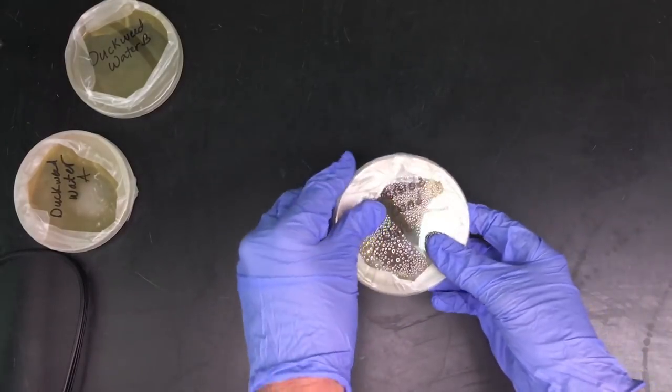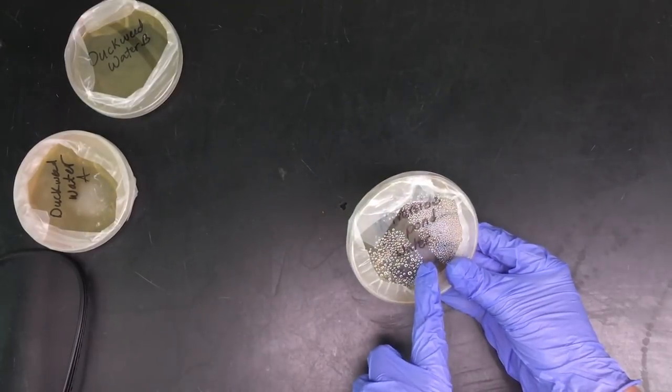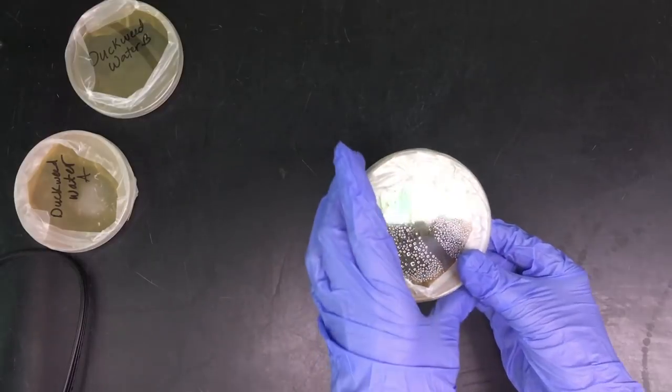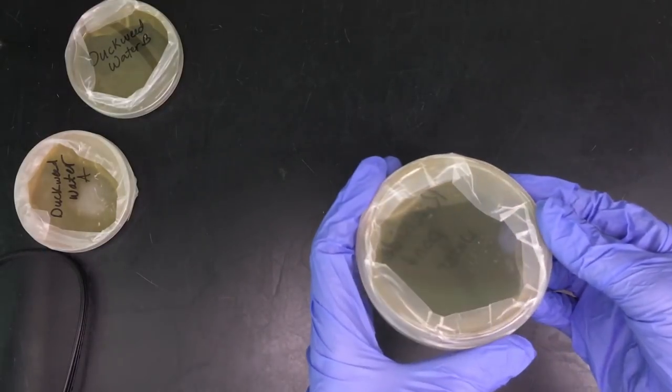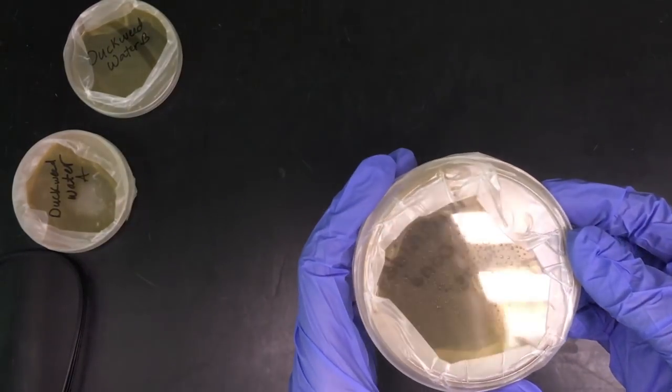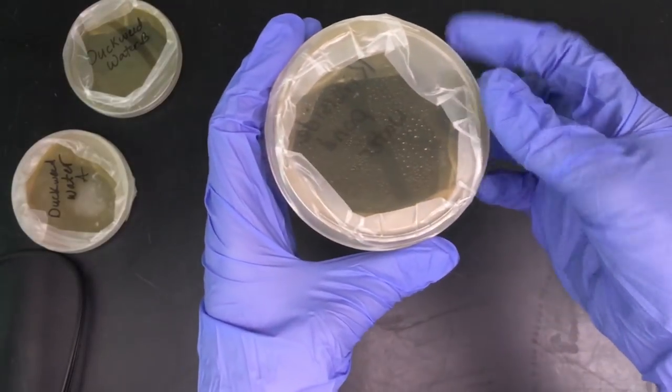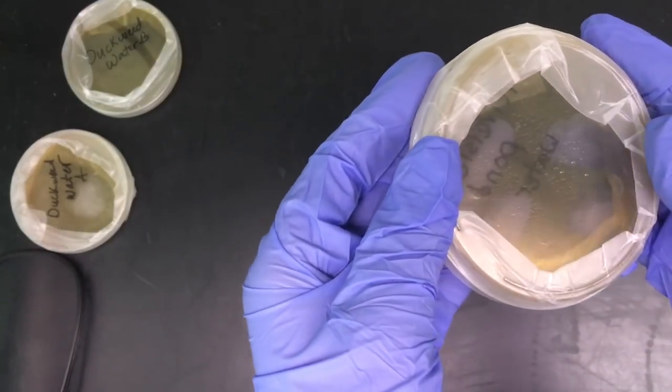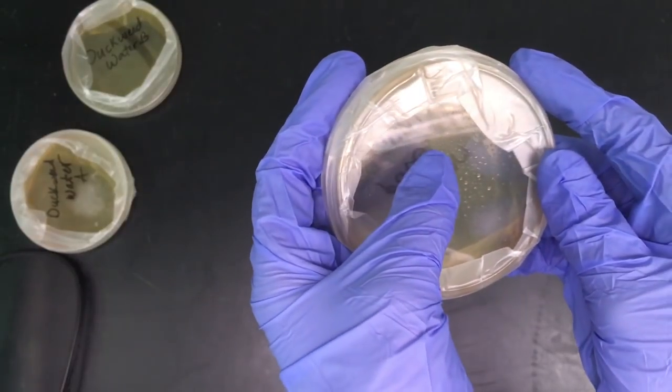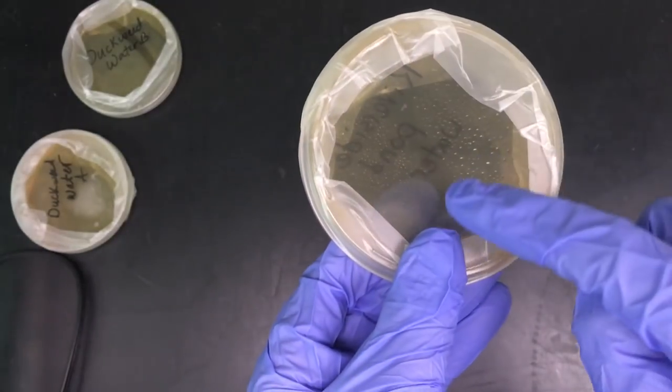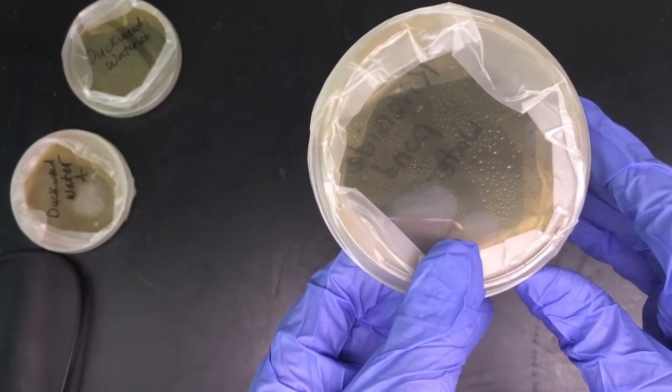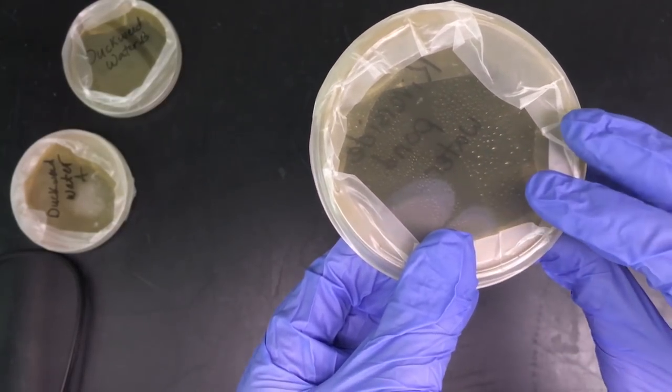So the next one here is riverside pond water. This pond water was also from reclaimed water, so treated wastewater. And it looks to be positive for one, so right there has one colony. Again probably from a mammal living nearby in the waste washing in.